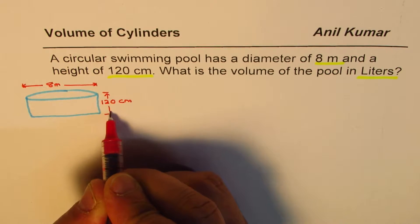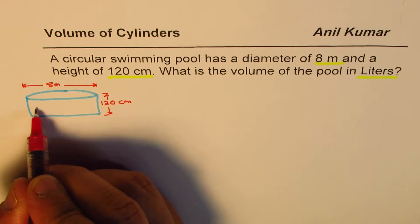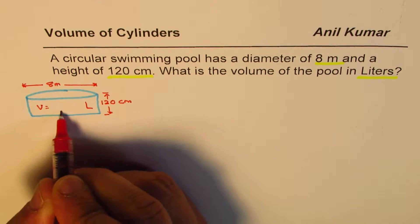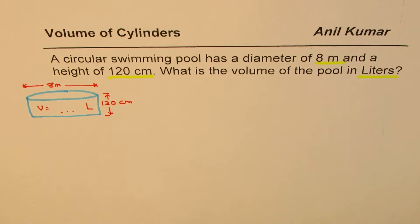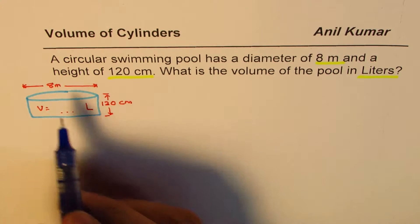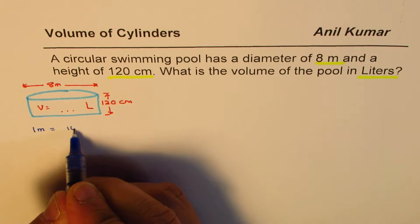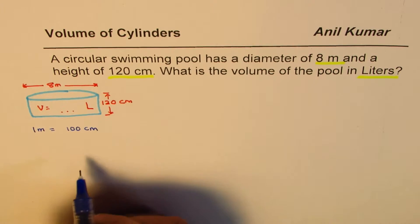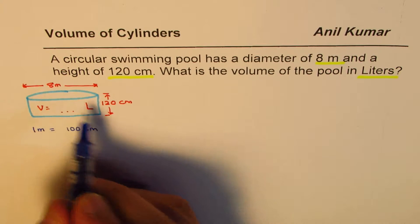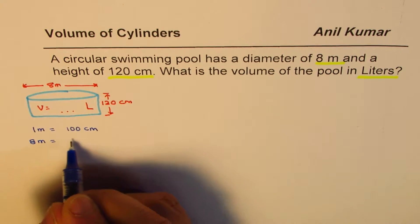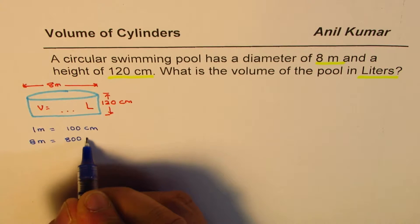Now we need to find the capacity or the volume in liters — how many liters is this? First, let us see how these units are connected. 1 meter is equal to 100 centimeters, so we could convert these units to centimeters. In that case, 8 meters equals 800 centimeters.